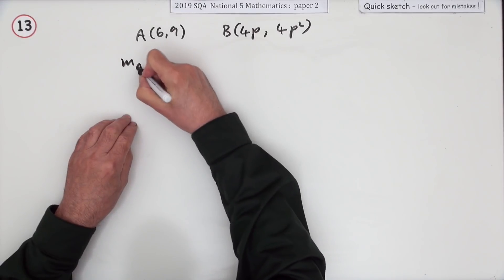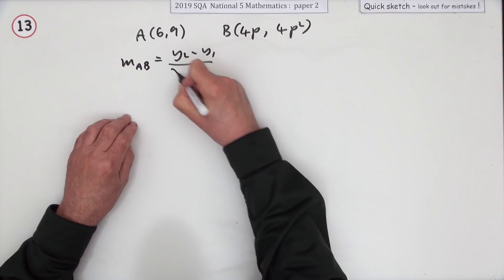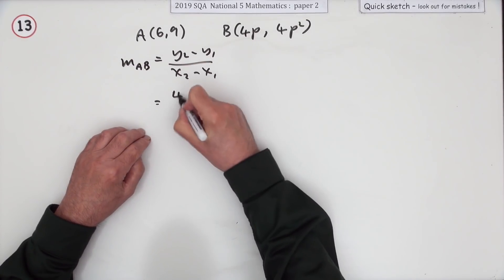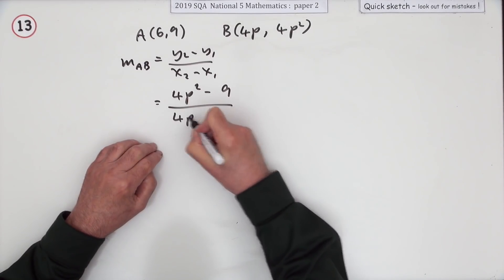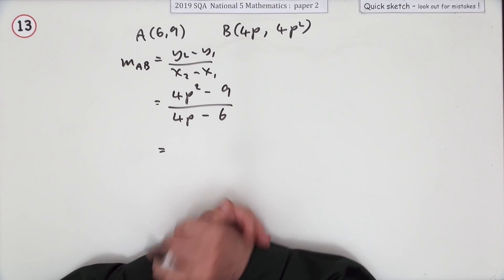The gradient of AB will be the difference in the y coordinates divided by the difference in the x coordinates. So that'll be 4p² minus 9, divided by 4p minus 6.